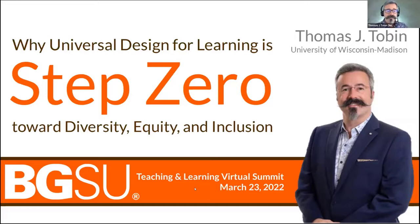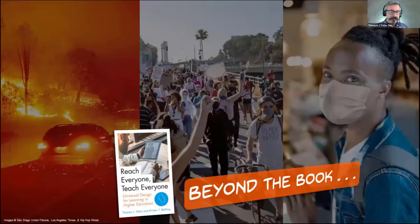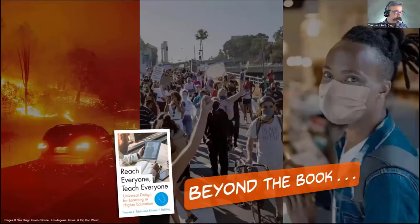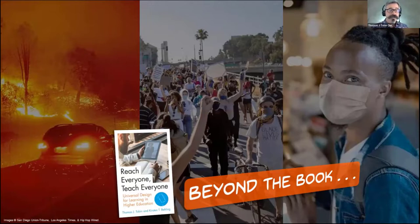The title is Why Universal Design for Learning is Step Zero Toward Diversity, Equity, and Inclusion. There's the Bowling Green State University logo and a smiling picture of me in a suit — so you know it's a serious thing. As we get started formally, I'd like to do a little bit of framing. On your screen are some images representing three big challenges.